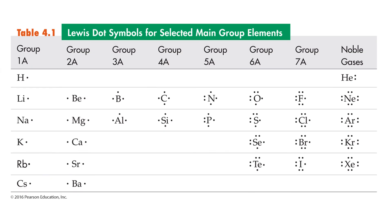This table shows the Lewis dot structures for all of the main group elements. Notice that within a group, the Lewis dot structures look exactly the same because within a group you have the same number of valence electrons.